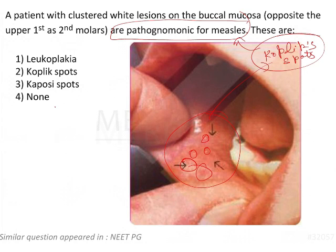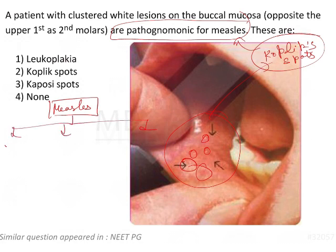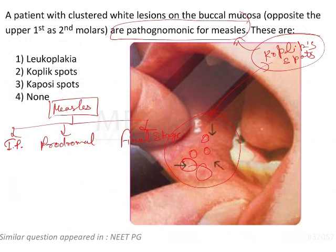We will be discussing measles in detail. There are three clinical phases for measles: one is the incubation period, then you have the prodromal phase, and then you have the pathological phase — the final stage of the disease.